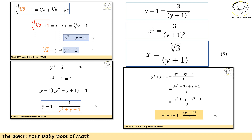Now let's review what we have. We defined x as the left-hand side and showed x cubed equals y minus 1 (equation 1). We used y for the third root of 2 and showed y cubed equals 2 (equation 2). We simplified equation 2 to get y minus 1 equals 1 over (y squared plus y plus 1) (equation 3). And we showed that denominator equals (y + 1) cubed over 3 (equation 4).